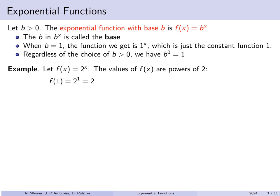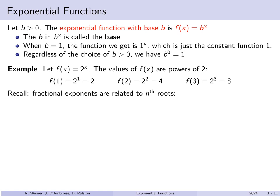For example, f of 1: since f of x is 2 to the x, f of 1 is 2 to the 1, which is 2. f of 2 is 2 to the second, which is 4. f of 3 is 2 to the third, which is 8, and so on. Fractional exponents, if you pick fractions for the value of x, are related to roots. x to the 1 over n is simply the nth root of x. x to the m over n can be considered as the nth root of x to the m.